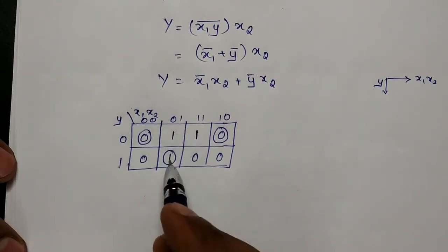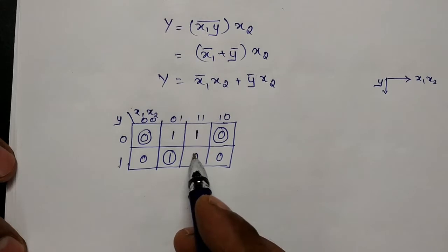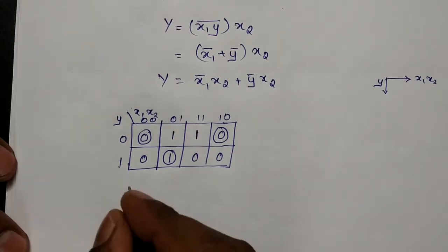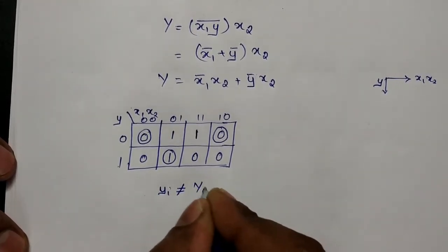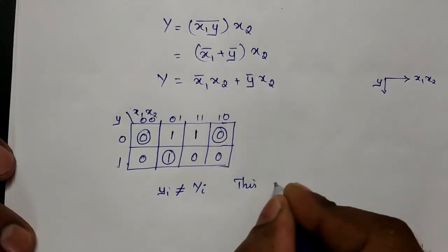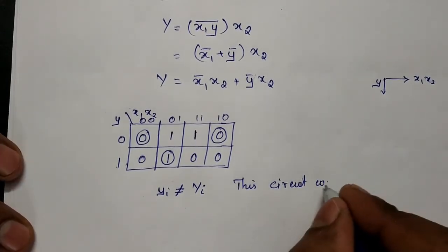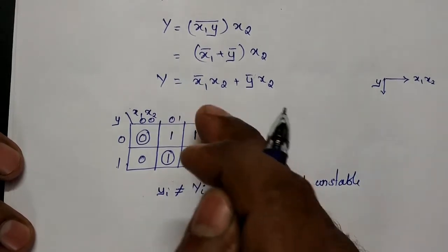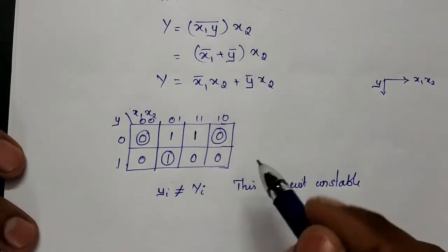Checking column by column: the first column has one stable state, the second column has one stable state, but the third column has no stable state. Therefore yi is not equal to capital Yi in that column, and the circuit is unstable because a column without any stable state exists.